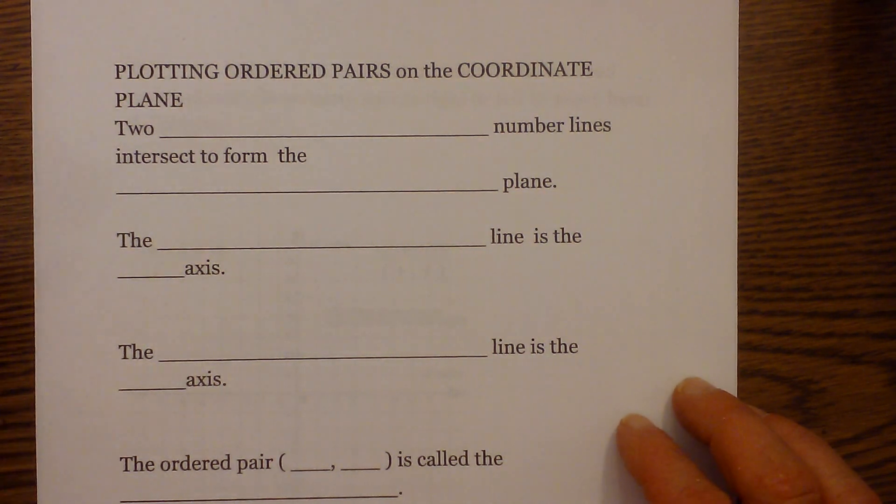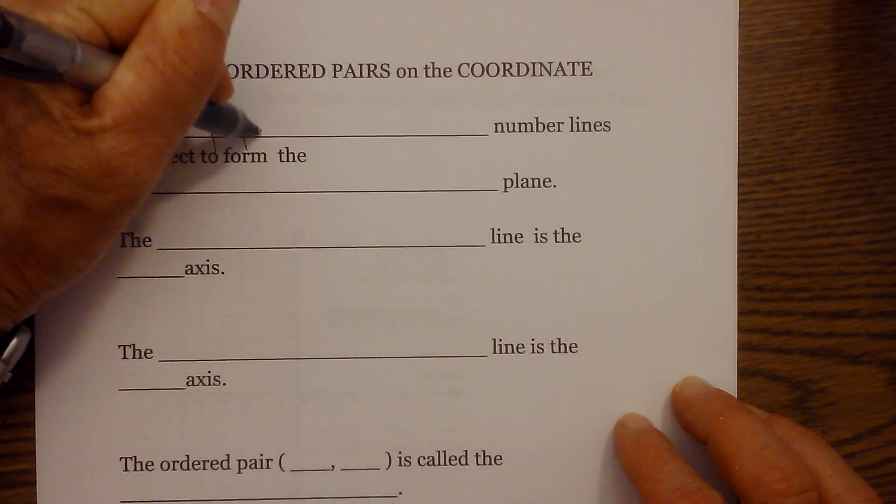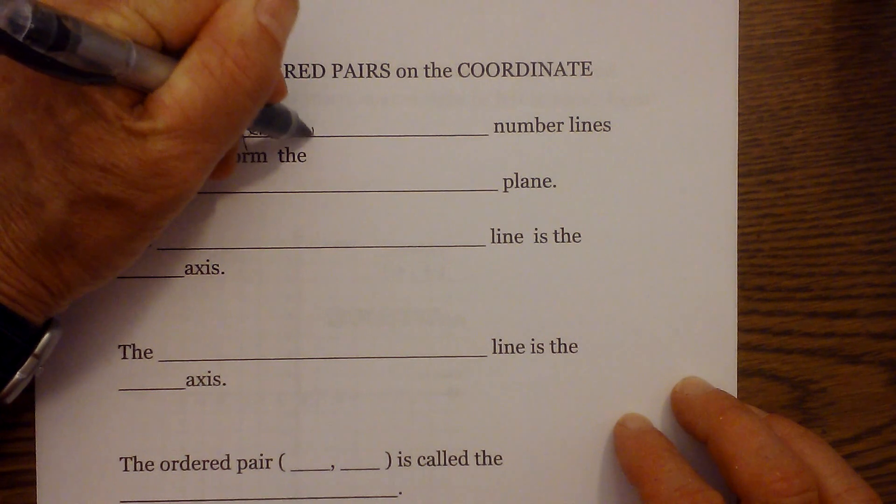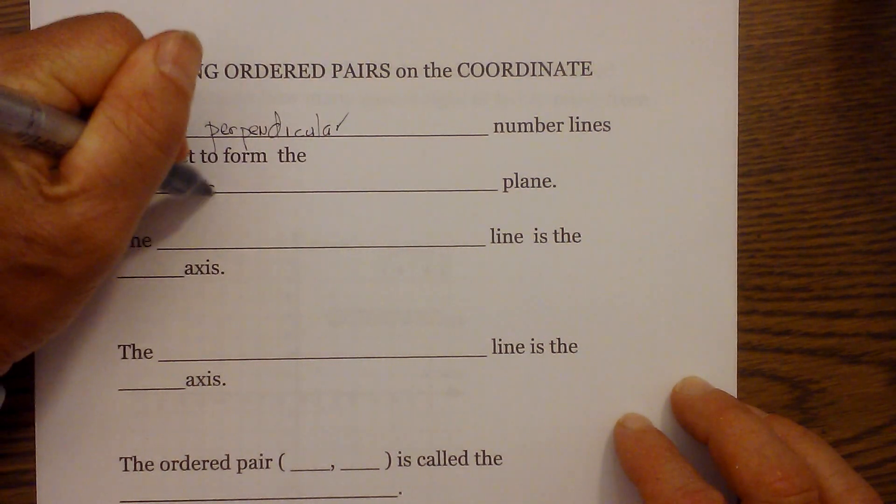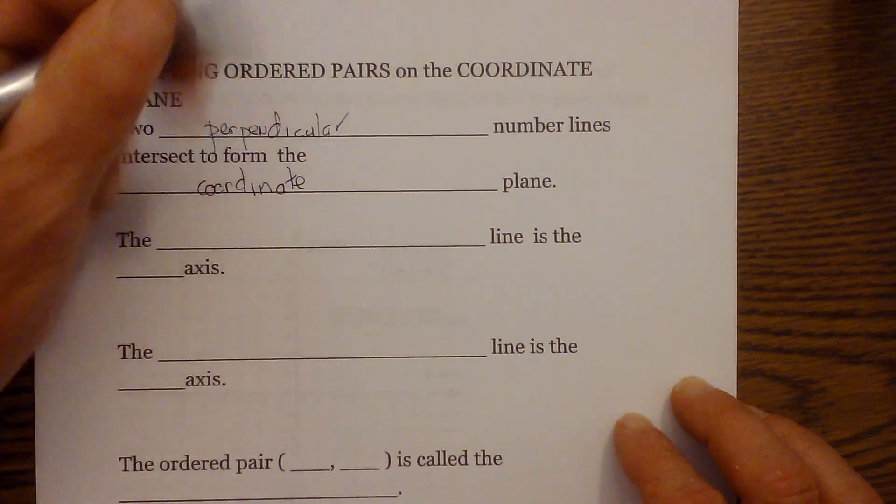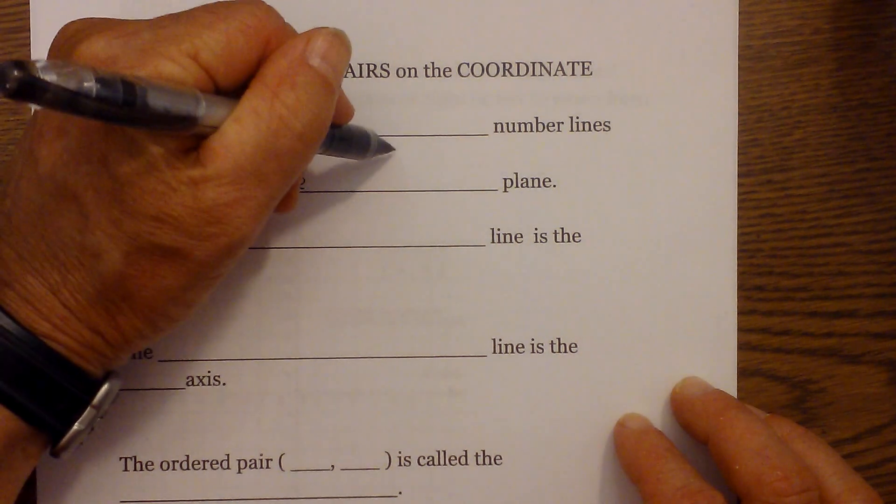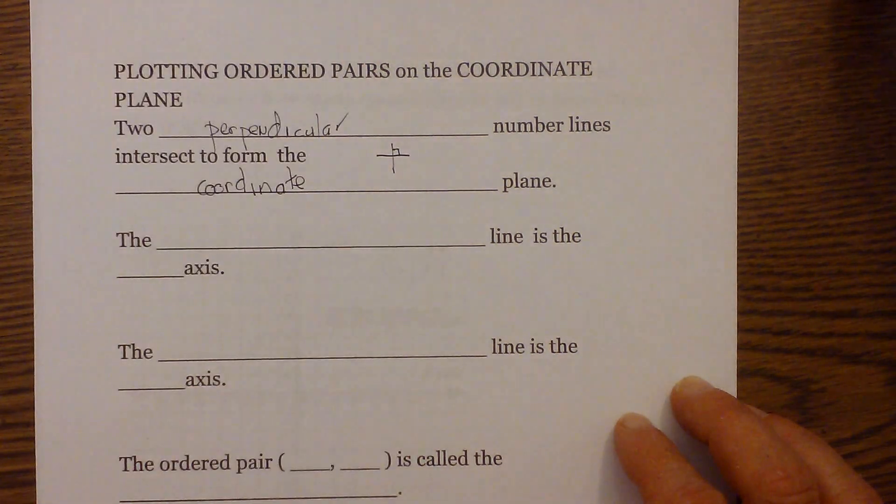The coordinate plane is created when two perpendicular lines intersect to form the coordinate plane. If you recall, perpendicular lines are two lines that cross at 90 degrees, so these would be perpendicular lines.